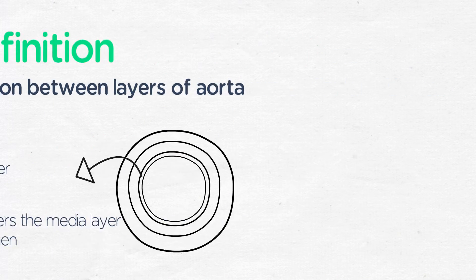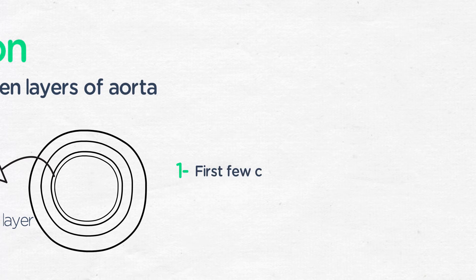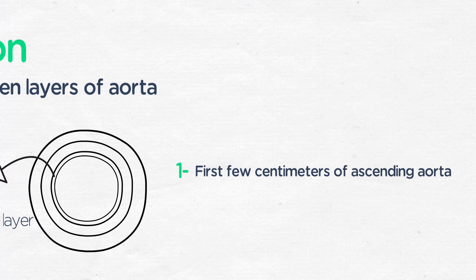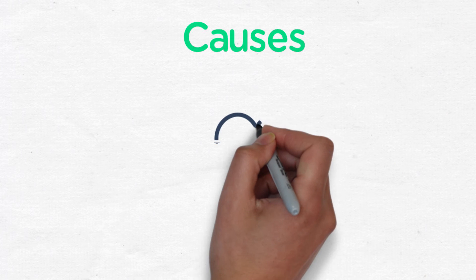The most common location for the intimal tear is the first few centimeters of the ascending aorta, just after it leaves the heart. The next most common location is just distal to the left subclavian artery in the descending aorta.